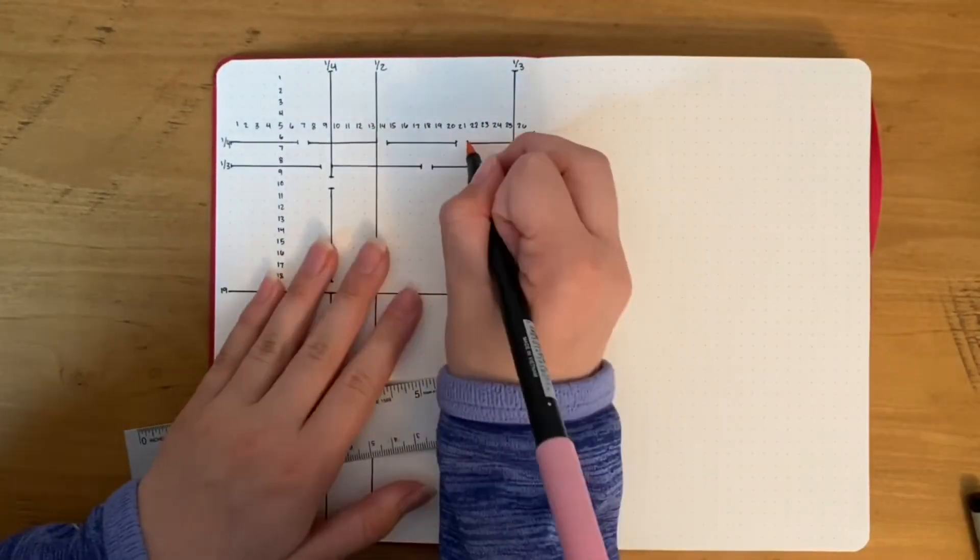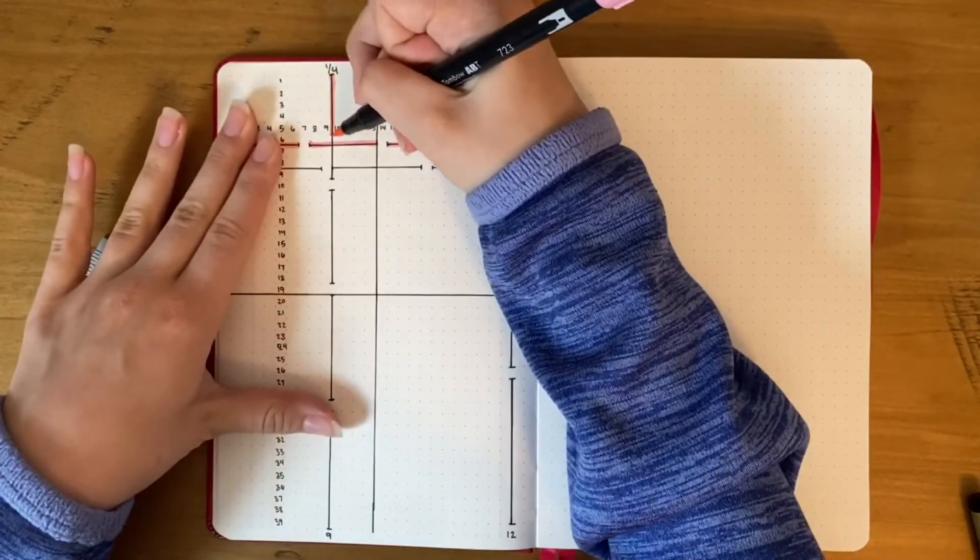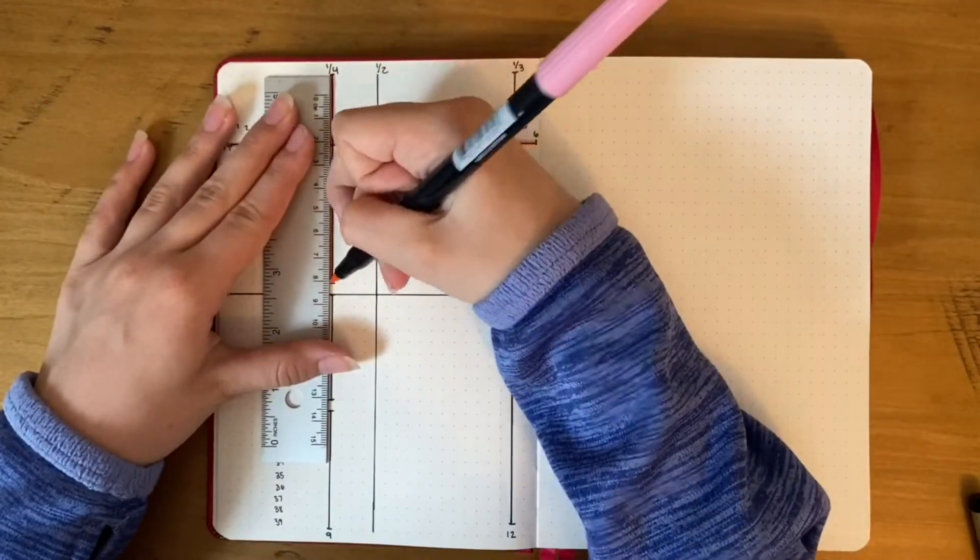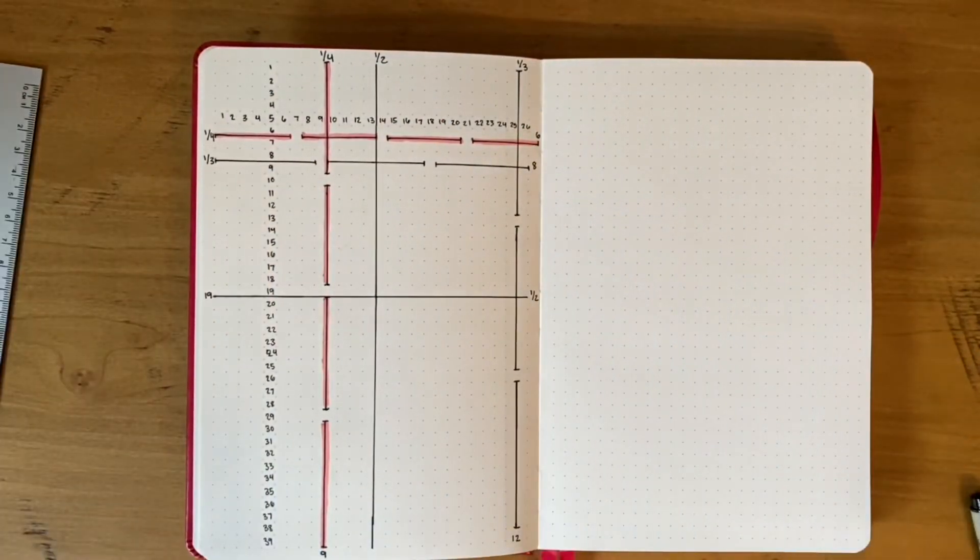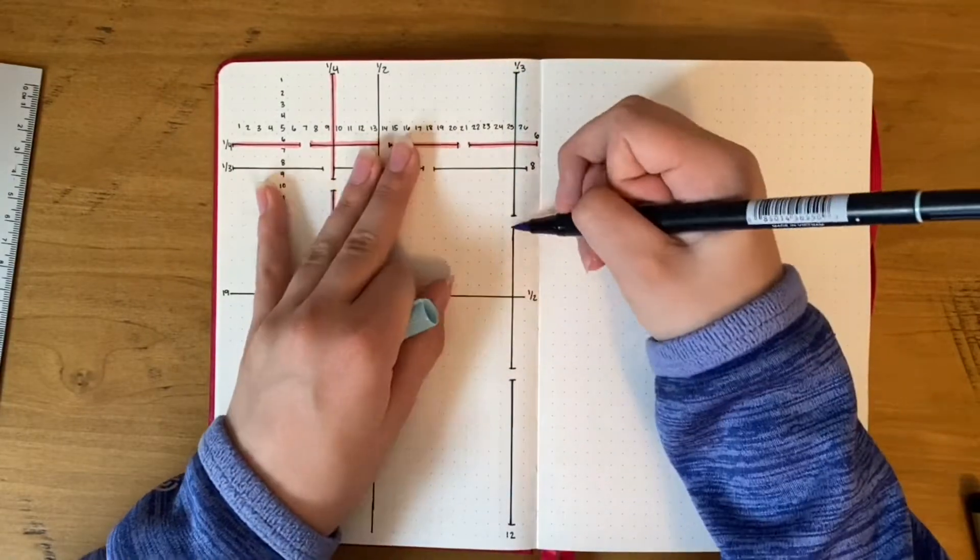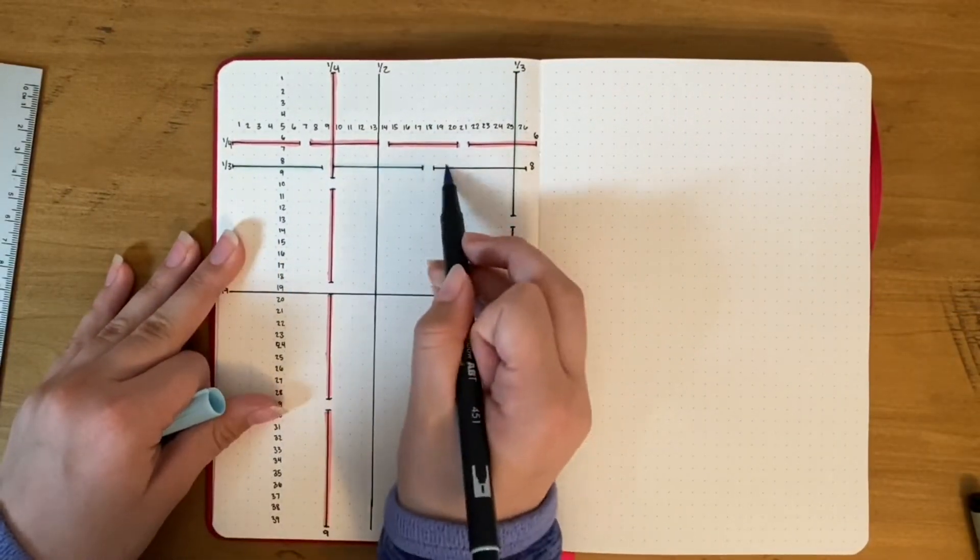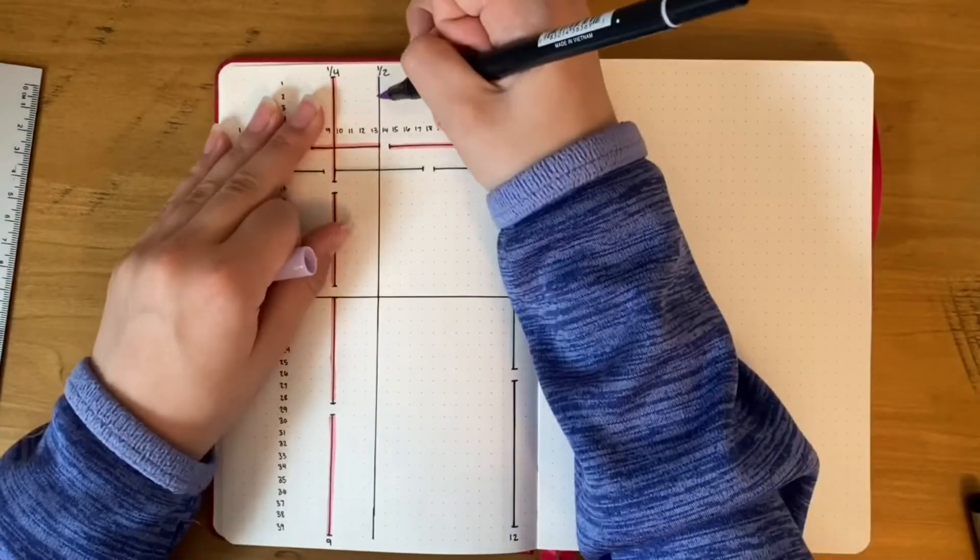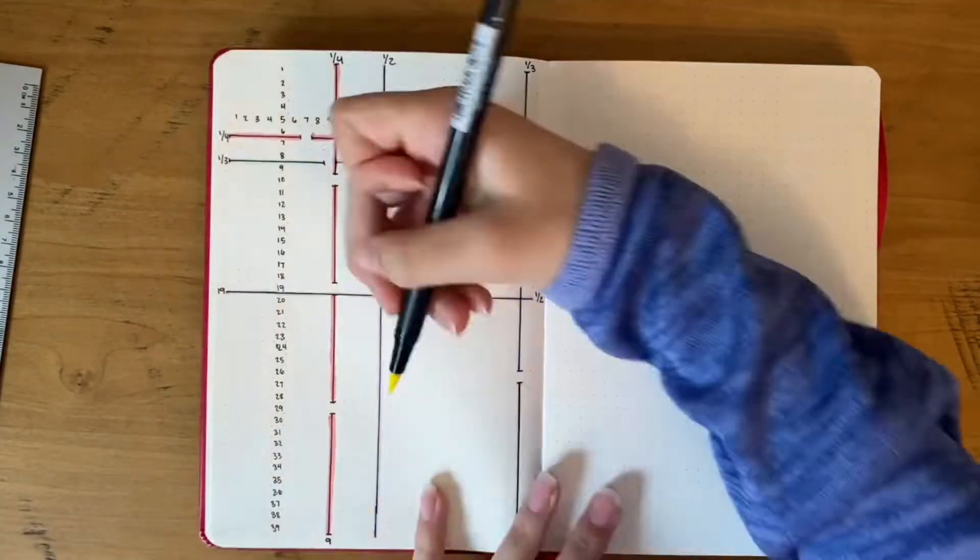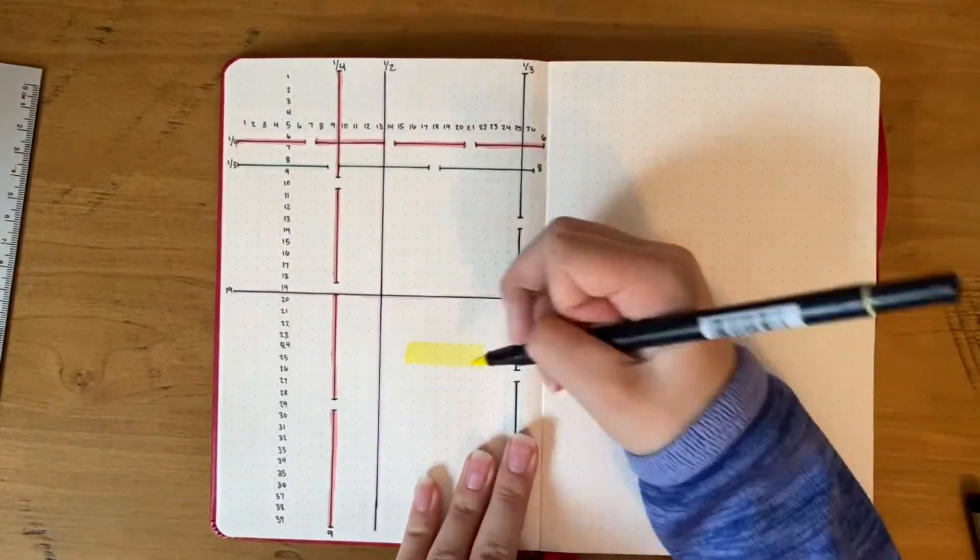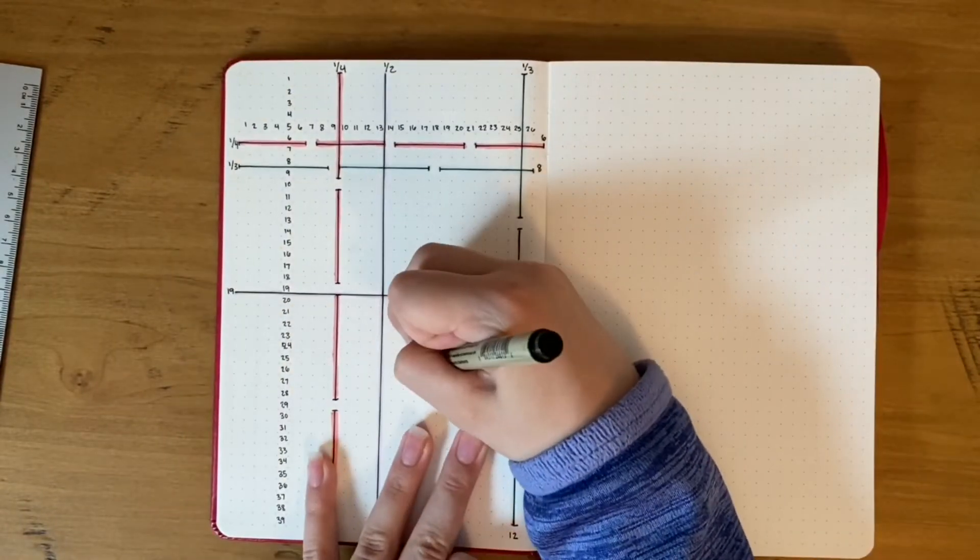After I did all the numbers and spacing, I went in with some different colored Tombow dual brush pens and drew some color so that everything has a different color. The fourths have a different color, the thirds have a different color, and the halves have a different color. Pink, purple, and blue were my colors. I finished off the spread with 'grid spacing cheat sheet' in cute letters.